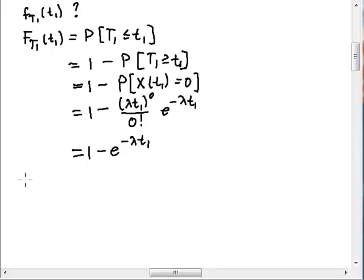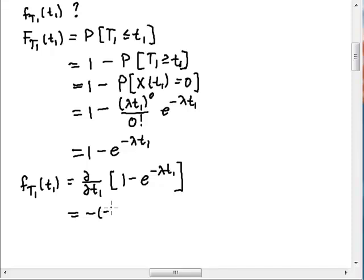And because this is the CDF, now I can solve for the PDF. The PDF is just the derivative, the first derivative with respect to t1. And there's only one function here that is a function of t1, so I'm going to get a minus, and then another minus one times lambda e to the minus lambda t1. And so it simplifies to lambda e to the minus lambda t1.